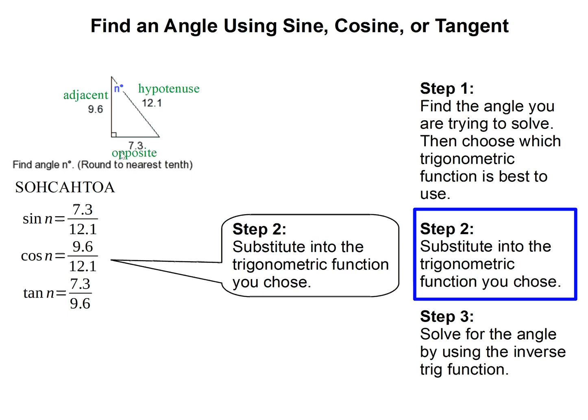If we wanted to do sine, sine of angle n equals 7.3 over 12.1. The cosine is 9.6 over 12.1, and so on.